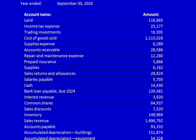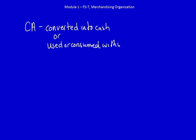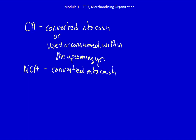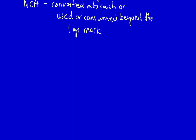In a previous video I introduced you to the differences between current assets and non-current assets. Current assets are assets that will be converted into cash, or used or consumed within the upcoming year from the financial statement date. Non-current assets are those that will be converted into cash or used or consumed beyond the one-year mark. Non-current assets actually have subcategories — let's look at those.